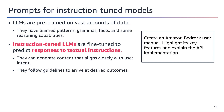Instruction-tuned LLMs are further fine-tuned to generate responses to textual instructions, enabling them to generate content that aligns closely with user intent by following guidelines to arrive at desired outcomes. The key advantage of instruction-tuned models is their ability to understand and respond to prompts in a way that aligns with the user's goals. This makes instruction-tuned LLMs particularly useful for tasks that require understanding and following instructions, offering a significant advantage over traditional language models that may generate more generic or unfocused outputs.